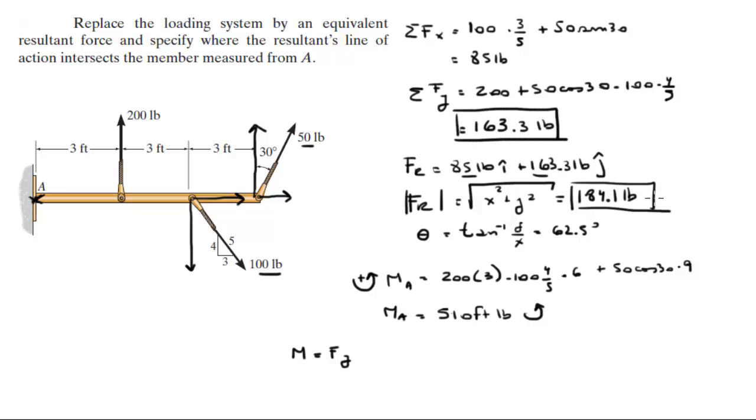So this is the number you're supposed to use, not this one. We use this one times X. So the moment is equal to 510, the force in the Y is 163.3, and the X is the point where that force acts.